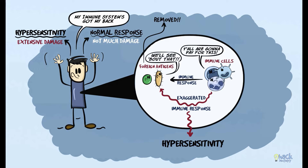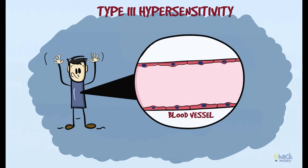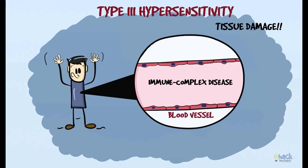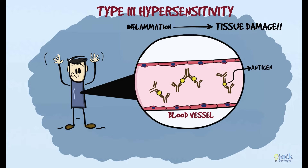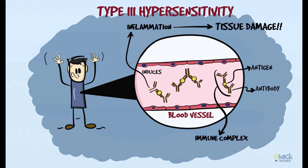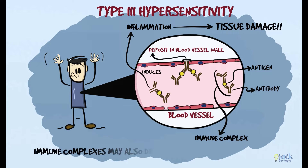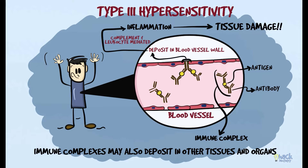There are four types of hypersensitivity reactions: types 1, 2, 3, and 4. Type 3 hypersensitivity is an immune complex disease where the tissue damage is a result of inflammation induced by antigen-antibody complexes, also called immune complexes. These immune complexes deposit in blood vessels or other tissues and organs, inducing complement and leukocyte-mediated tissue damage.